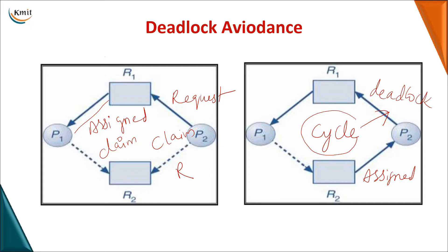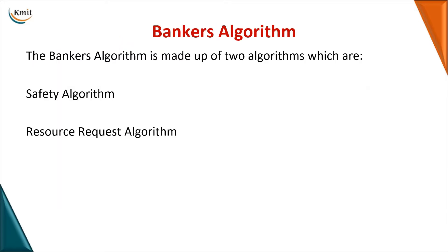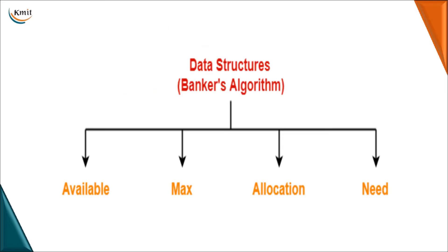The same resource allocation graph cannot be used for multiple instances, because the presence of a cycle may or may not lead to a deadlock. For multiple instances, we use the banker's algorithm, which is divided into two types: the safety algorithm and the resource request algorithm.